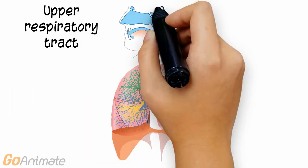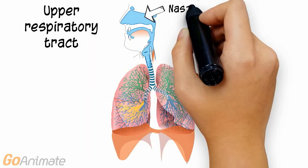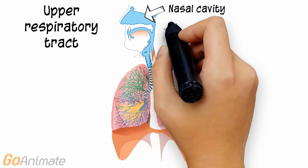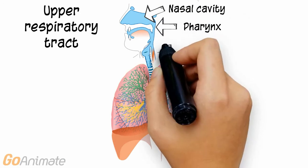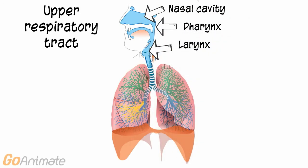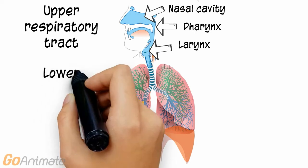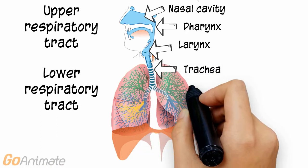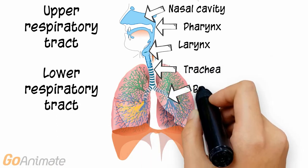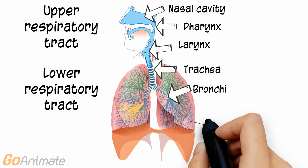It is divided into two large sections. The upper respiratory tract consists of the nasal cavity, pharynx, and larynx. The lower respiratory tract includes the trachea, bronchi, and lungs.